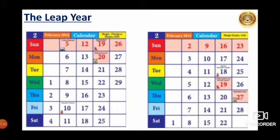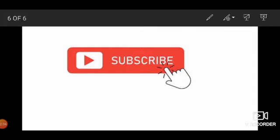Have you all understood? What is a leap year? How can we find a leap year? We take the number of that year and divide by 4. If it is divisible, then it is a leap year; if not, it is not a leap year. In a leap year, in the month of February, we have total 29 days. Now we will stop here. Kindly subscribe our channel for further notification. Thank you.